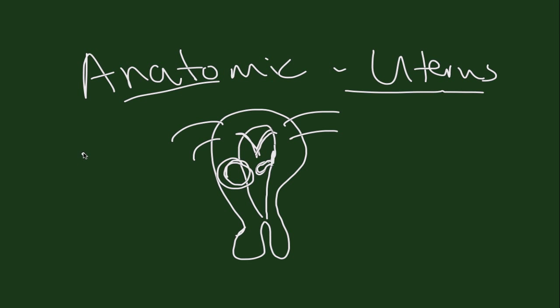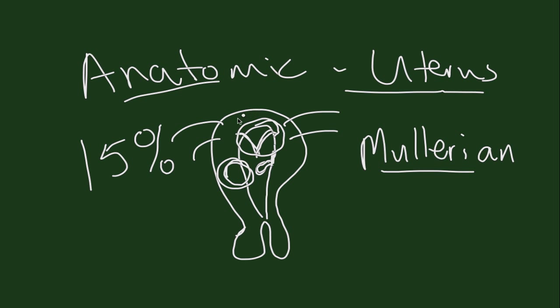For anatomic etiologies, this occurs up to 15% of the time, and the vast majority are going to be uterine septum, which is a problem with embryology, Mullerian development. The Mullerian tubes or ducts are the ones that form the uterus, and we'll talk about a uterine septum more.